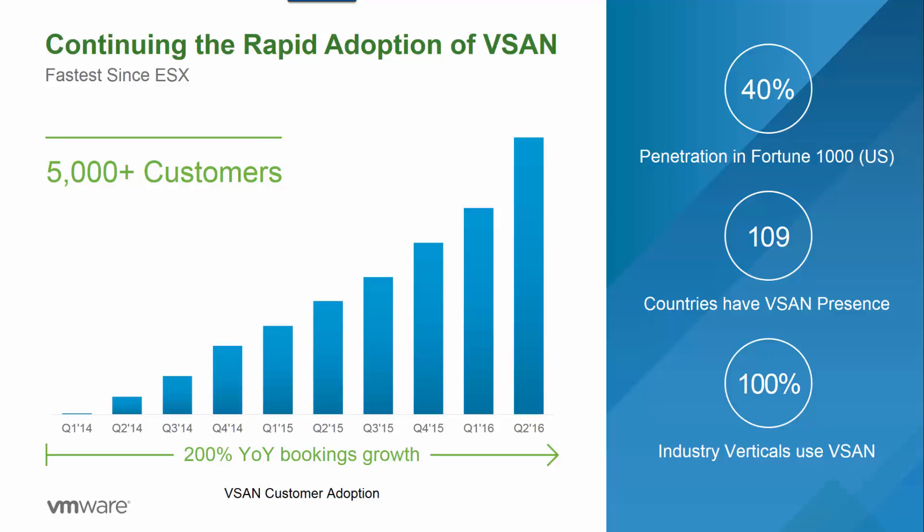When talking to your customers about Virtual SAN, one thing to mention is that Virtual SAN has been very rapidly adopted thanks to all of our efforts. We have surpassed over 5,000 production customers, have sold into 40% of the Fortune 1000 companies, so these big enterprises are fueling a major part of the growth here. We have seen over 200% growth for three consecutive quarters now with Virtual SAN sales. But given a vSphere install base of 500,000 customers, we still have a huge opportunity in front of us for vSAN.